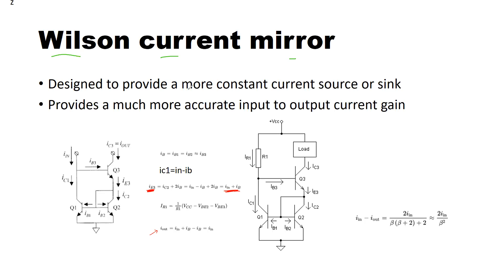designed to provide a relatively more constant current source or sink. It means in the output characteristics, once it is on, it's going to provide a constant current source or sink irrespective of the variations in the load. It also provides much more accurate input to output current gain, so your I_out